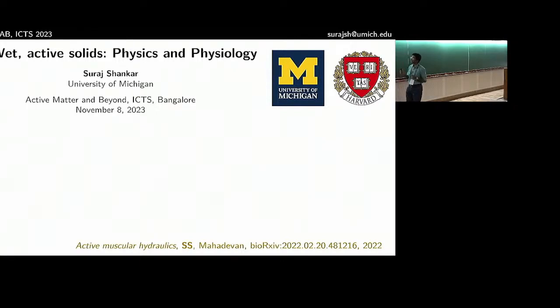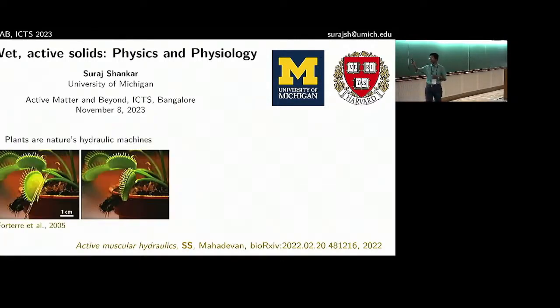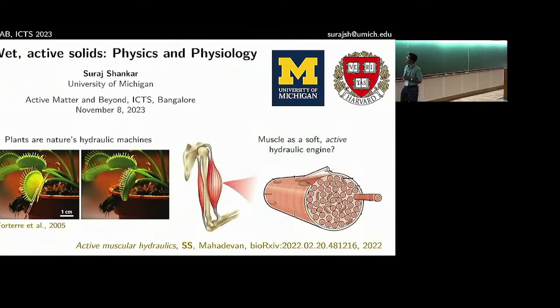One place where we know a lot about water movements driving motion is in plants. They drive fast motions, particularly through hydraulic movements of water through hydrated tissues and cells. One of the more famous ones being the snapping of the Venus flytrap. In animals, we have muscles to go around and do our things, including motion and behavior. I want to suggest and ask and think about what is the role of the water within muscle fibers? Is there a way to think about, in a coarse-grained sense, of muscle as a soft, active, and hydraulic engine? What are the consequences of thinking of muscle as a wet, active solid?